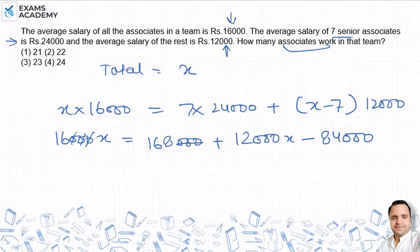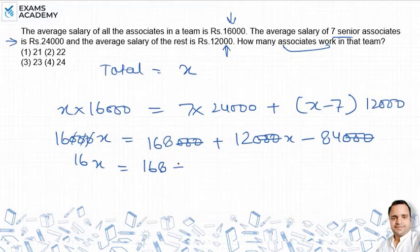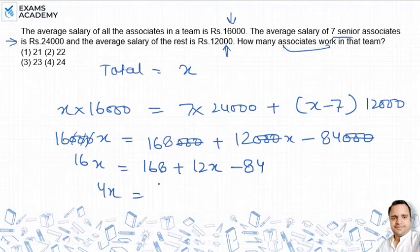After cancelling and simplifying, we get 16x on one side. Then: 168 plus 12x minus 84. Moving 12x to one side gives 4x. So 168 minus 84 equals 4x, which means 84 equals 4x.